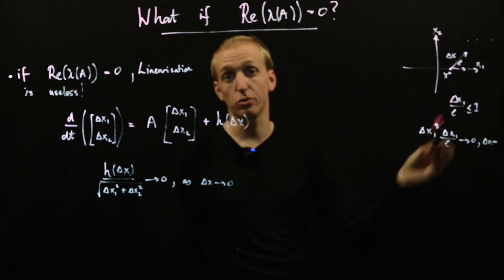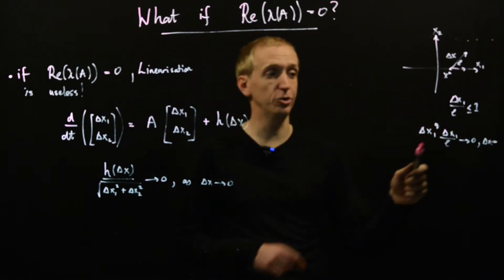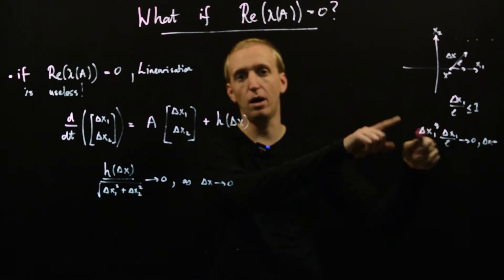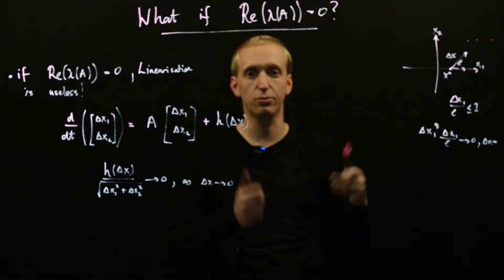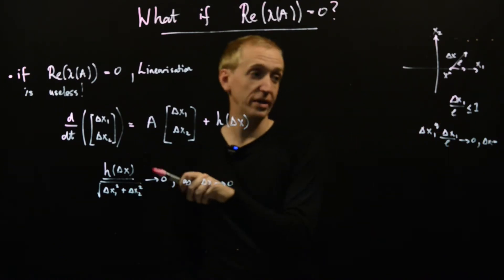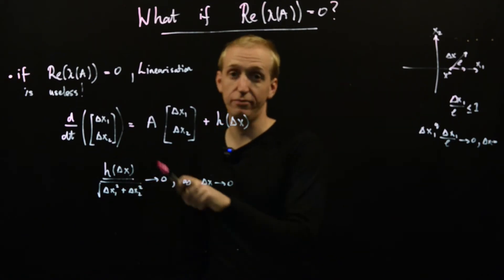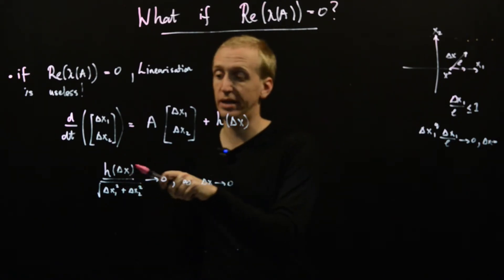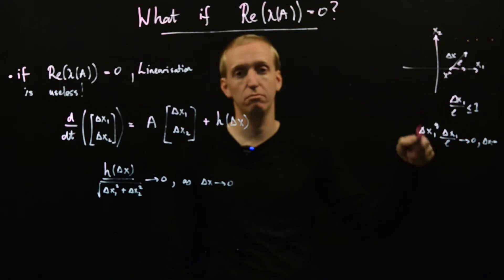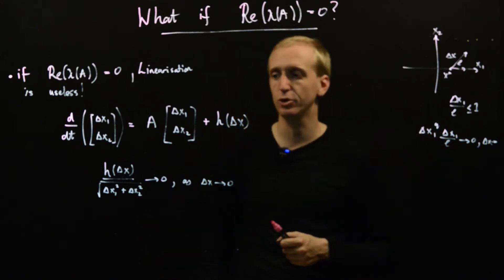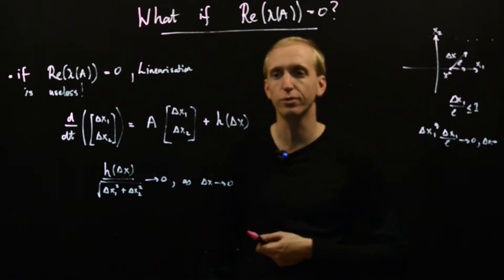And by just modifying this argument a little bit, you can show that any sort of higher order powers of delta x1, delta x2, and so on, you'll always have this holding for them if all h of x contains its polynomials. And the same is true for trig functions and all of the usual things that you have.